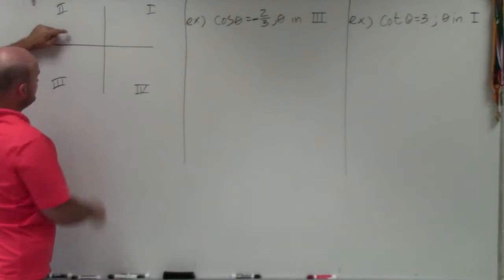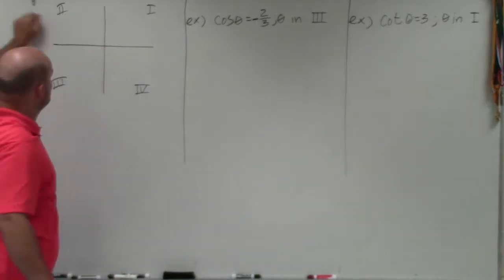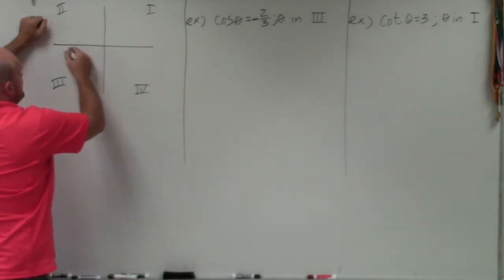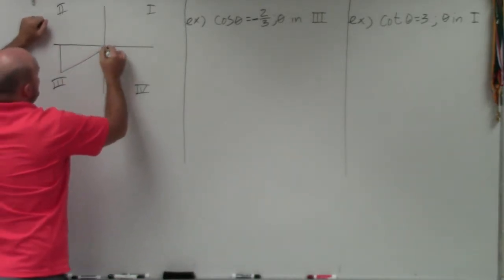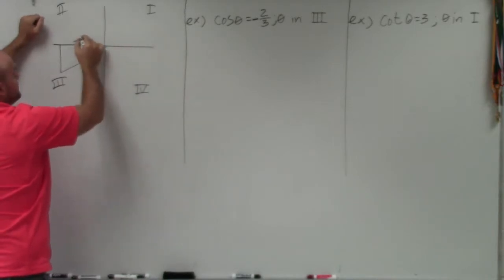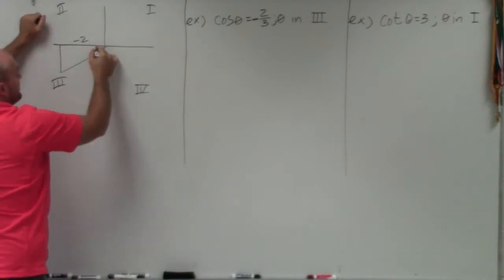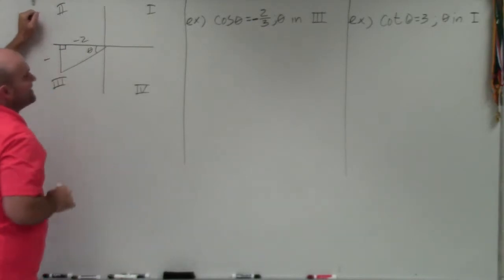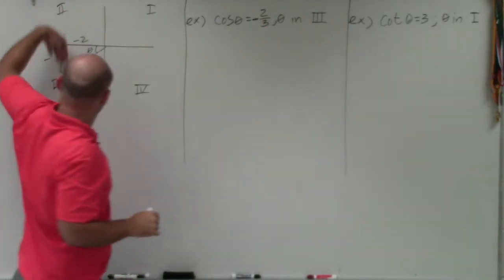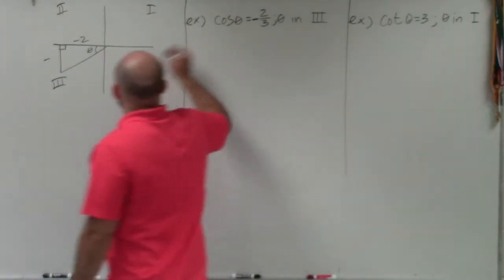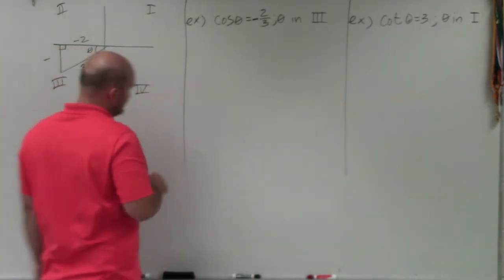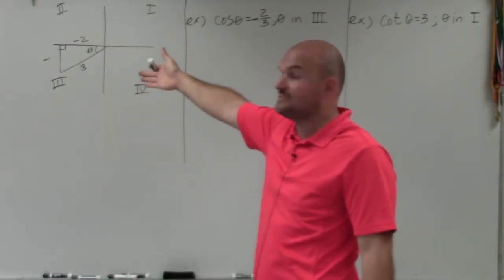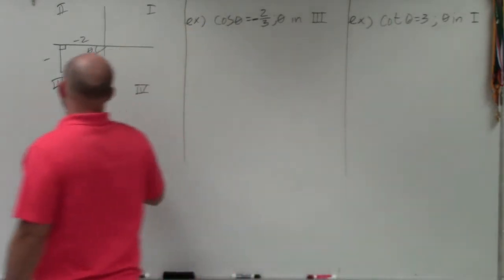For any triangle in the third quadrant, it's going to look like this. The negative side represents negative cosine. I don't know what sine is, but I do know sine is going to be negative because we're in the third quadrant. My hypotenuse is going to be 3.